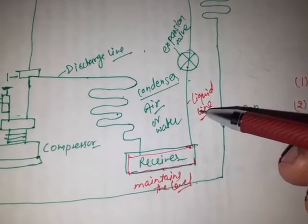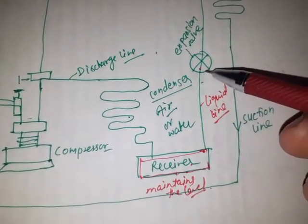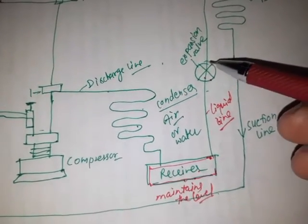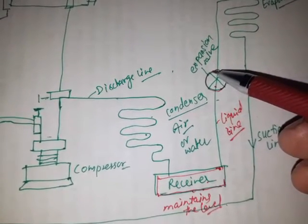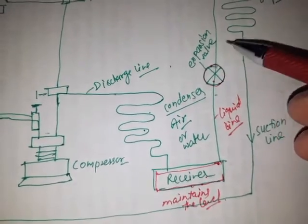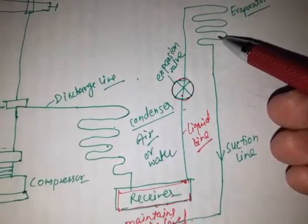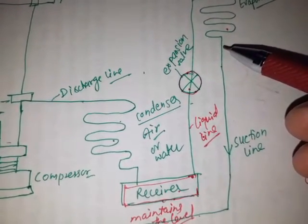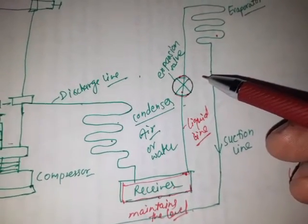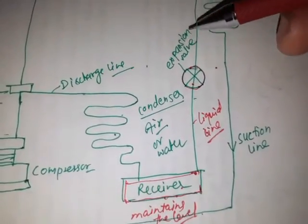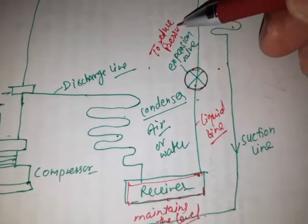The liquid line carries the liquid refrigerant from the receiver tank and conveys it to the expansion valve. The main function of the expansion valve is to supply the proper amount of refrigerant to the evaporator, but after reducing the pressure, so that the refrigerant may take sufficient heat from the refrigerating space during evaporation. The main work of the expansion valve is to reduce the pressure of the refrigerant.